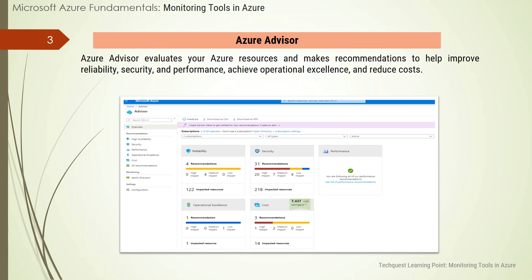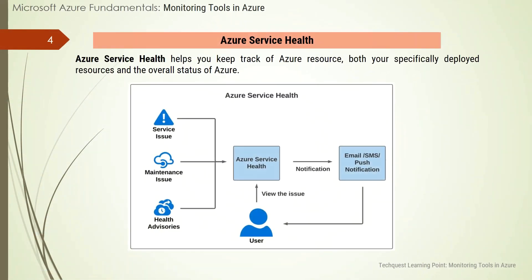Reliability is used to ensure and improve the continuity of your business-critical applications. Security is used to detect threats and vulnerabilities that might lead to security breaches. Performance is used to improve the speed of your applications. Operational Excellence is used to help you achieve process and workflow efficiency, resource manageability, and deployment best practices. Cost is used to optimize and reduce your overall Azure spending.